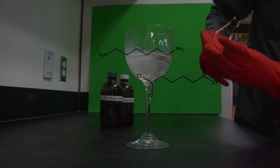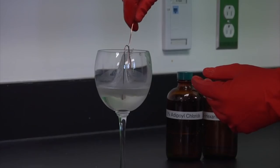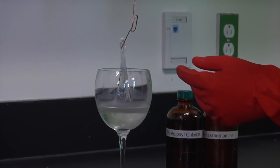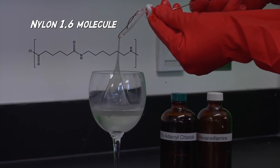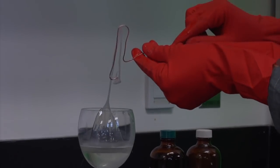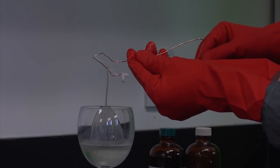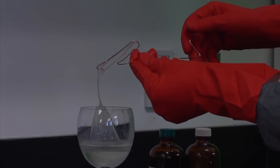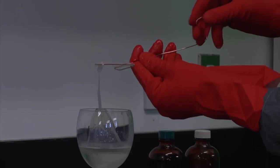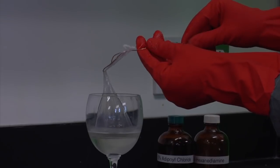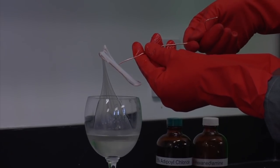I'm using a fish hook here to grab that nylon. So every time I'm pulling, I'm removing some nylon so another polymer of nylon is forming between the two layers. I'm creating a solid nylon in between two layers of liquid.